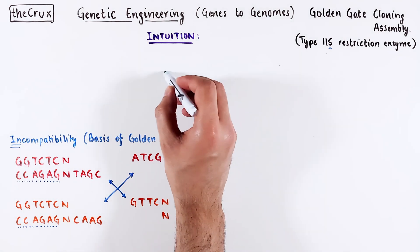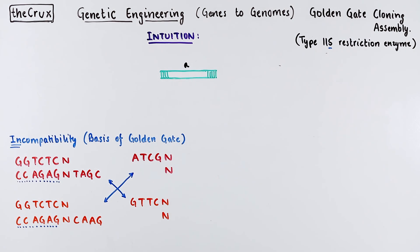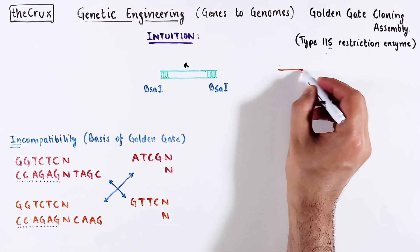Say you have a fragment A that needs to be cloned in a vector. A simple way is to have BSA1 on both ends, and you can insert this into a vector with compatible BSA1 sticky ends.